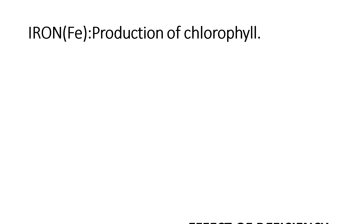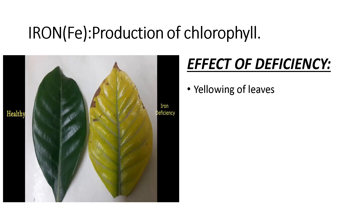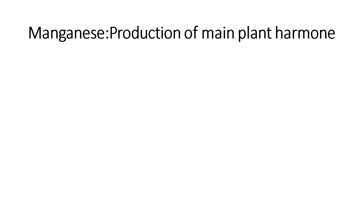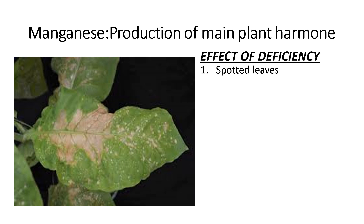Iron is also important in the production of chlorophyll. The effect of its deficiency in plants results in yellowing of leaves. Manganese plays a very important role in the production of main plant hormones. Manganese deficiency results in spotted leaves, as you can see in this picture, and also retarded — that is, slow — growth of plants.